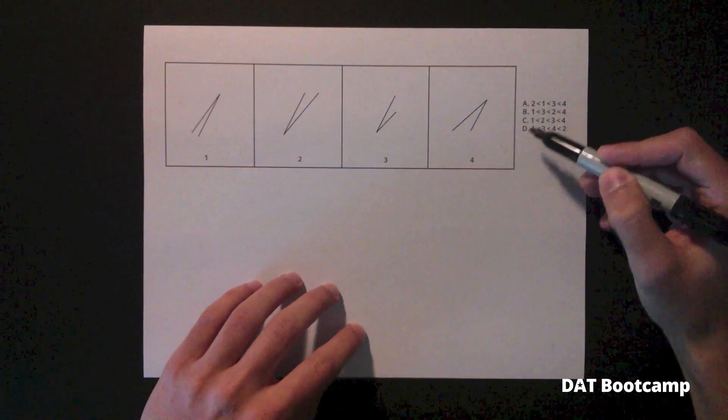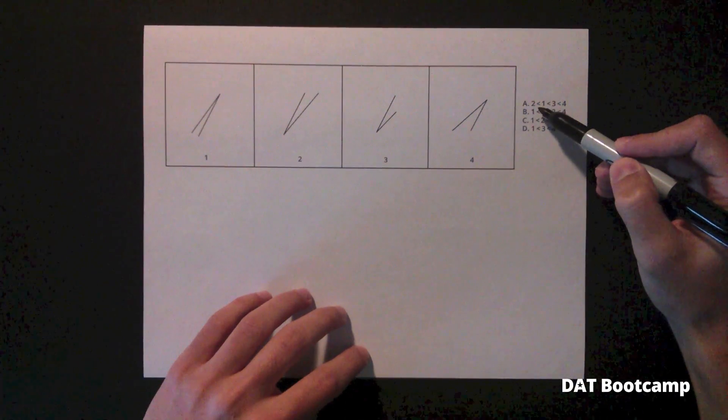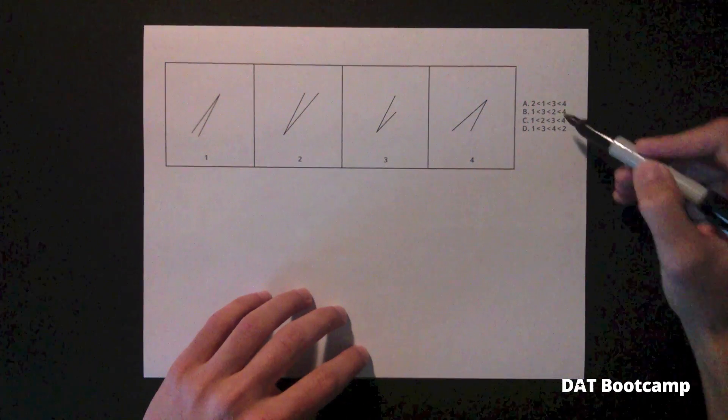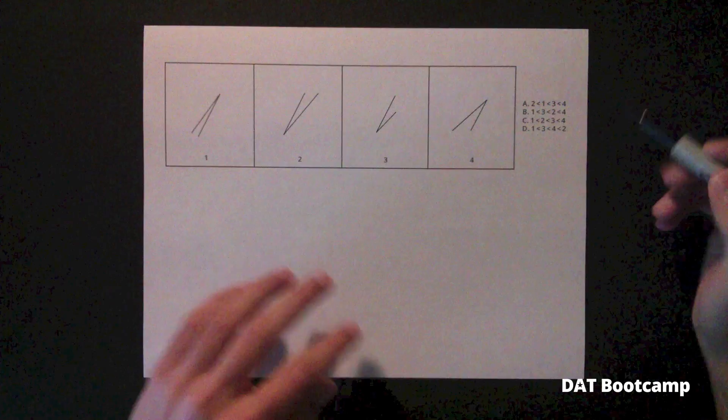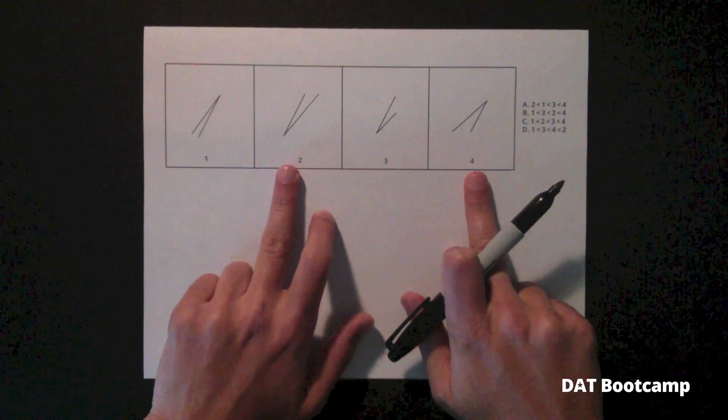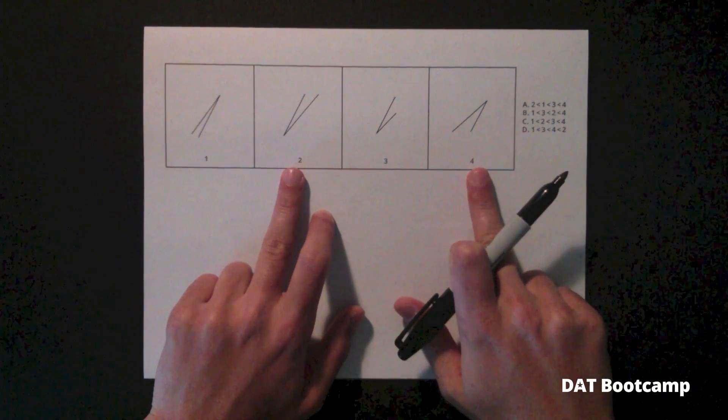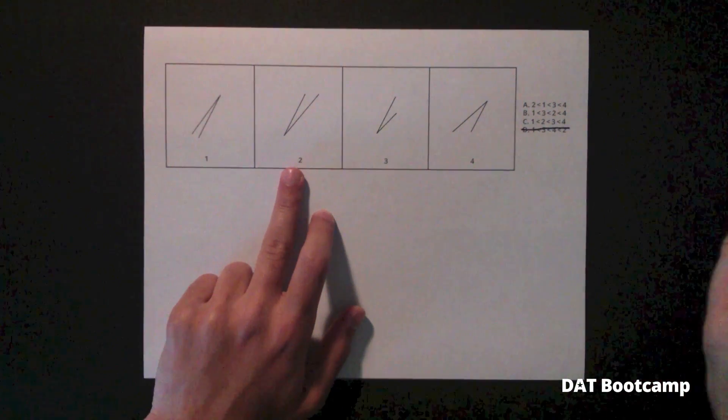So for example, let's go for this problem too. Let's compare the smallest angle or the largest angle. Let's go with the largest one again. We see that the largest angle is either 4 or 2. So by comparing these two angles, we see that 4 is larger. Therefore, answer choice D must be incorrect.